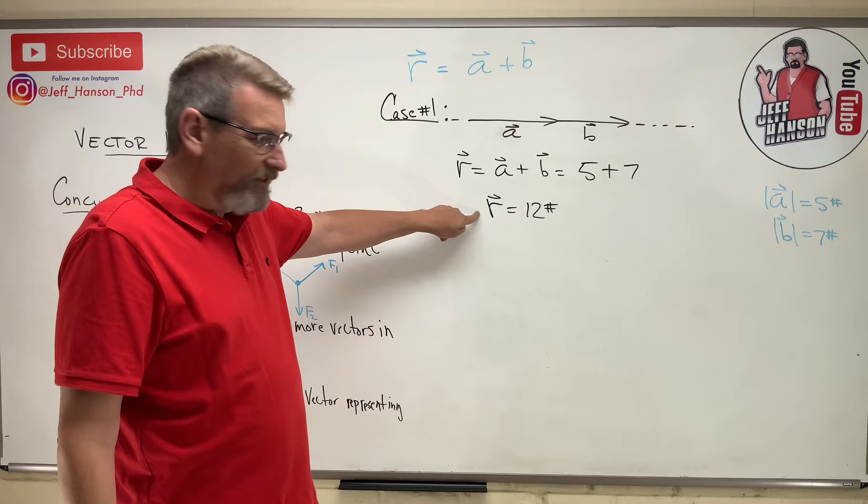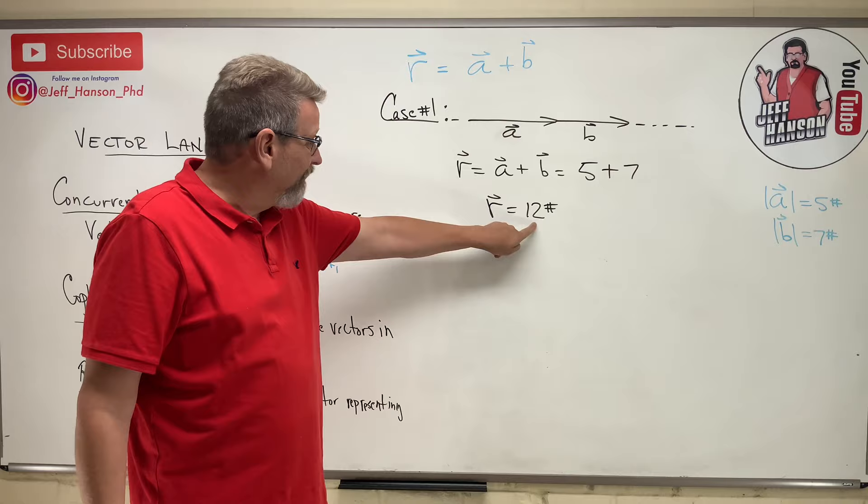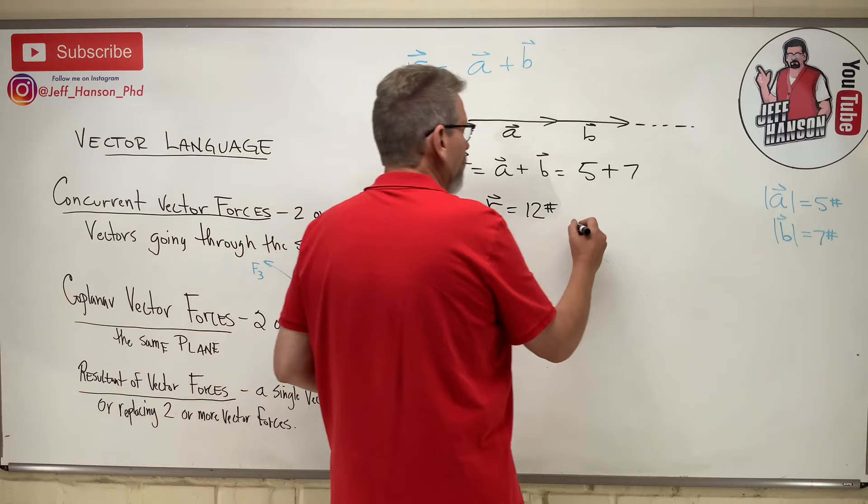Well, what's on this side of the equal sign? A vector. So what's on that side? Not a vector. Uh-oh. Those aren't the same, are they? Whatever you got on one side, you got to have on the other side. That's not a vector. So it has magnitude. So it needs some direction, doesn't it?